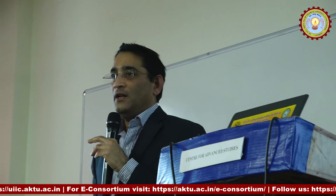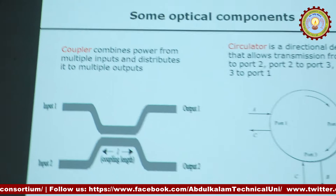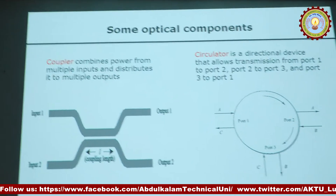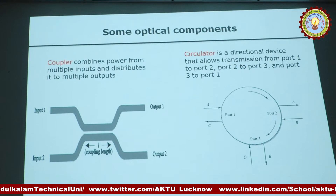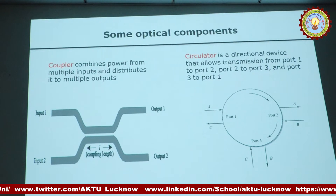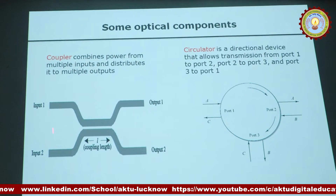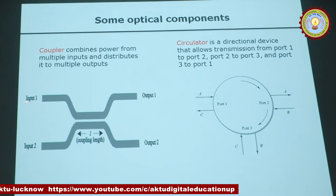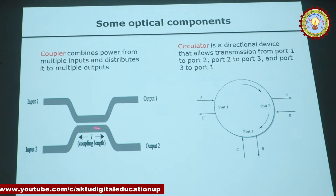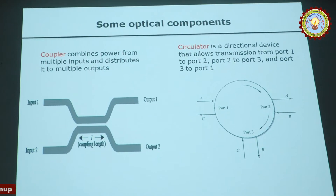Here are the optical components our architecture uses. The first is an optical coupler — a simple two-input, two-output device. It combines the power of two input signals and distributes it equally to two outputs. If the two signals are at different wavelengths, you've essentially got a simple broadcast switch.